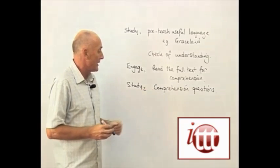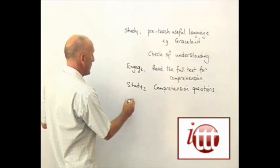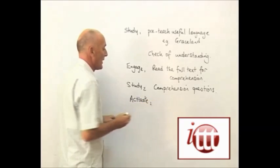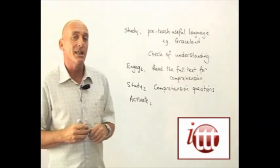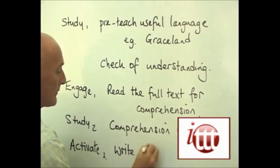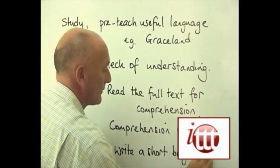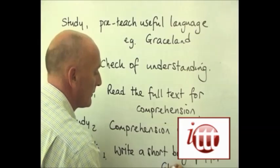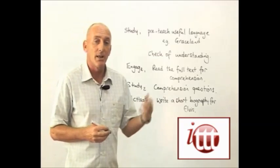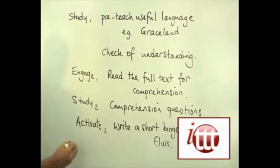Once they've completed the second study activity and we've gone through our feedback and correction, we can then go on to our first activate. What we're going to do in the first activate activity is ask them to write a short biography for Elvis. On completion of the writing phase, they can then feed that back and we can have a look at any common errors created from this particular activity and study those errors.